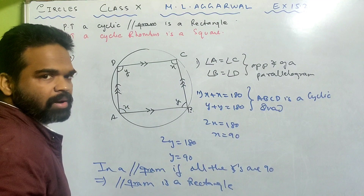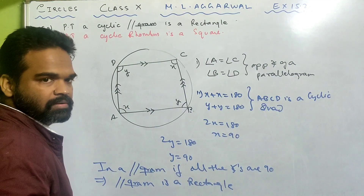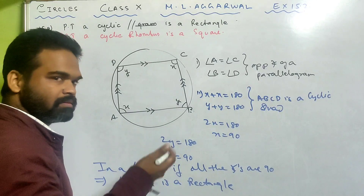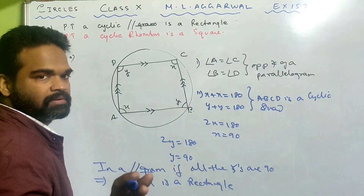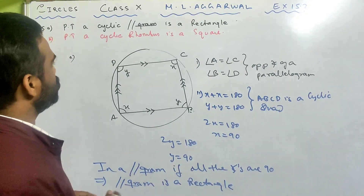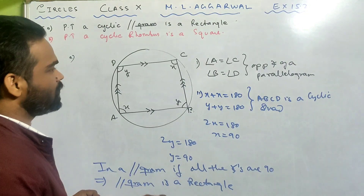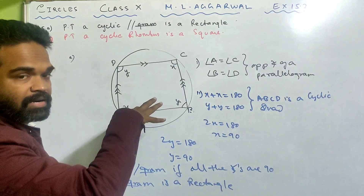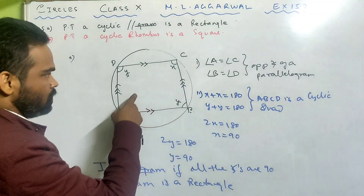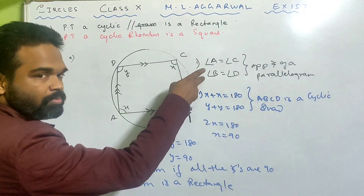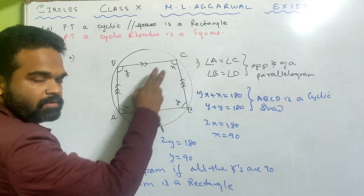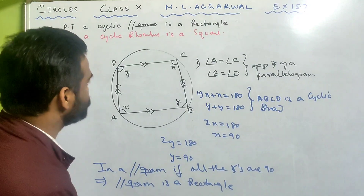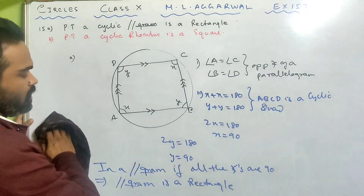Which means 2X equals 180, so X equals 90 degrees. 2Y equals 180, so Y equals 90 degrees. All the angles become 90 degrees. And in a parallelogram, if all the angles are 90 degrees, it implies that parallelogram is a rectangle. Rectangle is a type of parallelogram only. Even if one of the angles becomes 90 degrees, then it is a rectangle. Done.